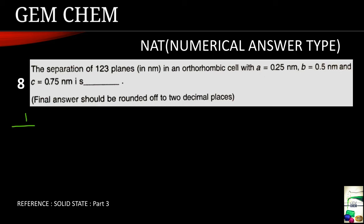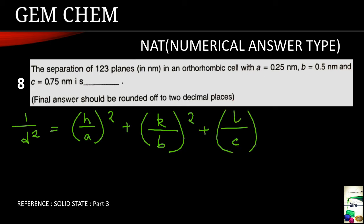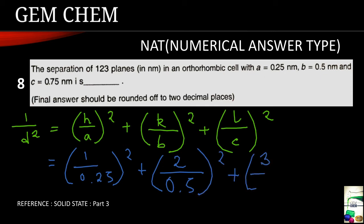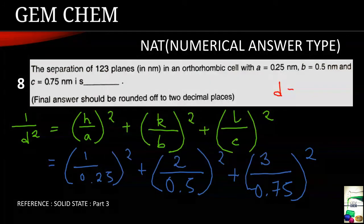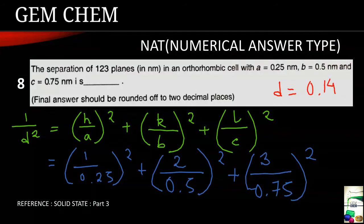Now we know the formula for orthorhombic is 1 by D square is equals to H by A whole square plus K by B whole square plus L by C whole square. And if we put the values here that is for H it is 1 by 0.25 whole square plus 2 by 0.5 whole square and for the next one 3 by 0.75 whole square. And if we continue with simplification ultimately the value of D comes to be as 0.14 nanometer.